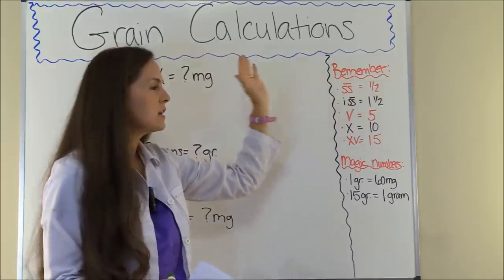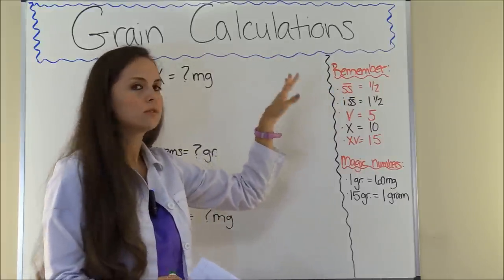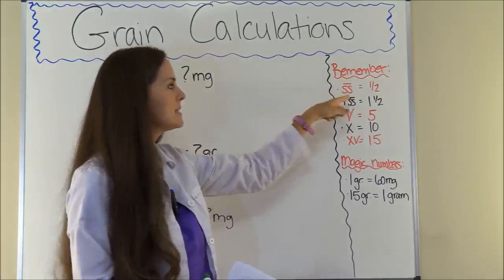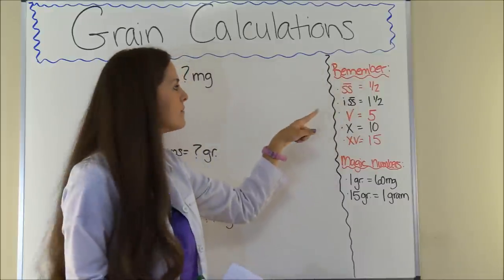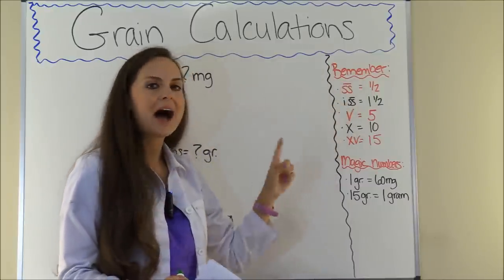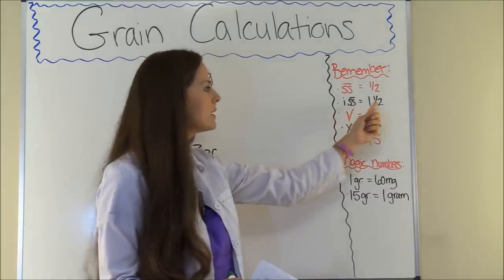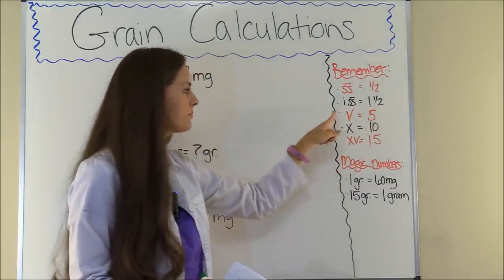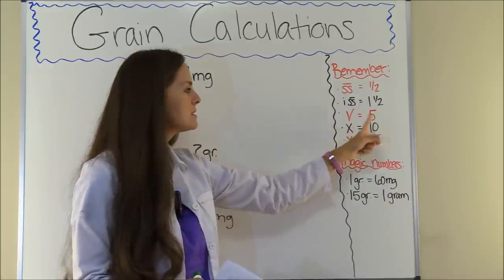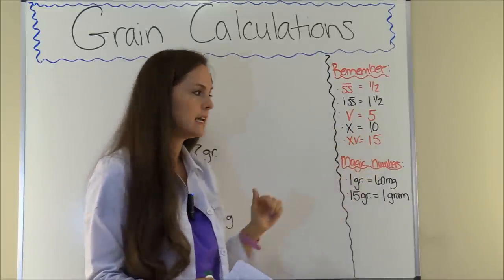Here are the basic Roman numerals to commit to memory. SS — which may have a bar or two dots over it — means one half, so 0.5. ISS means one and a half, since I equals one and SS equals half. V means five. X means ten. And XV means fifteen.